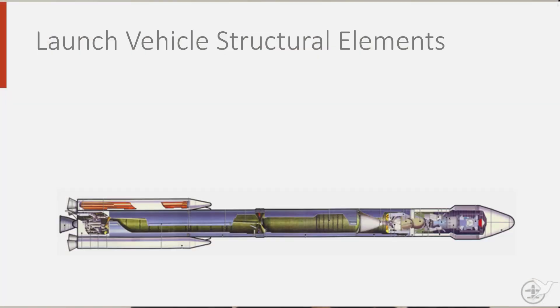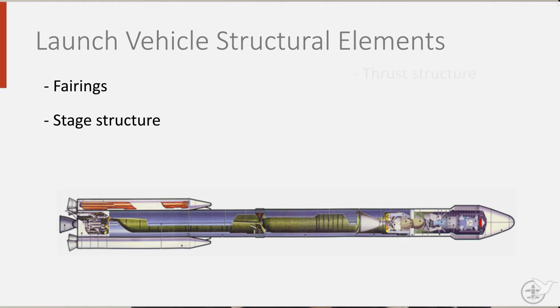If we take a good look at a launch vehicle, such as this one here, we can distinguish four main structural elements: the fairing, the stage structure, the thrust structure, and the adaptors. Let me discuss each element one by one, starting with the fairing.